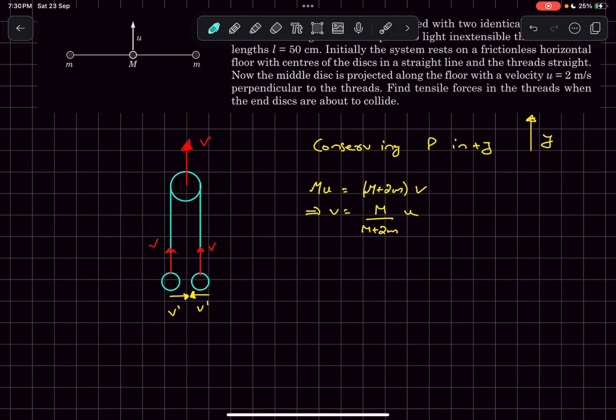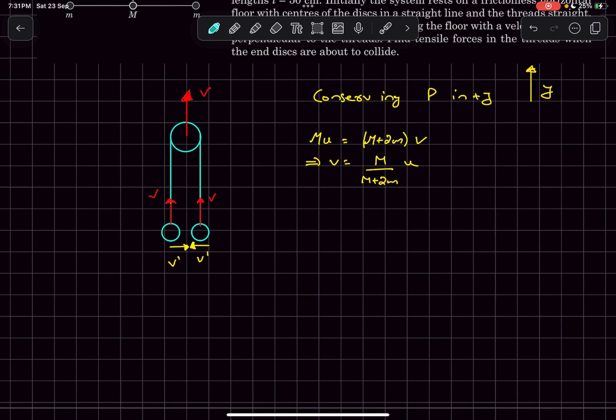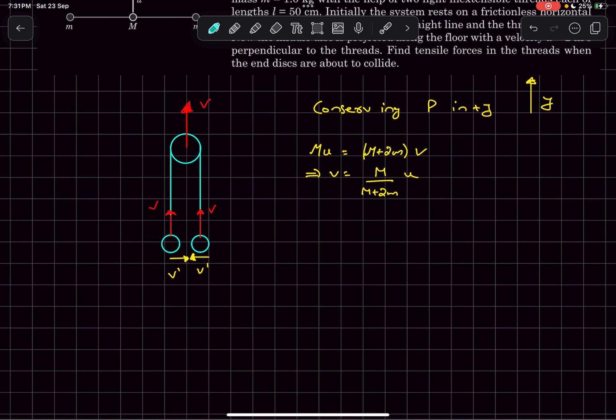We also know for a fact that the total mechanical energy of the system has to be conserved. The initial energy of the system is simply half Mu squared. Finally the kinetic energy of the bigger mass is going to be half capital M v squared, and the kinetic energy of the two small masses I'm going to write it as twice of half small m times the speed of the smaller mass.